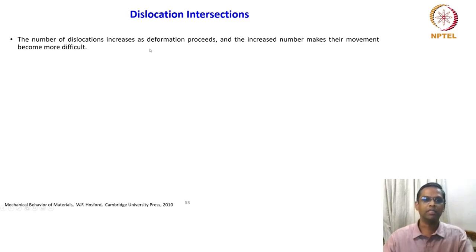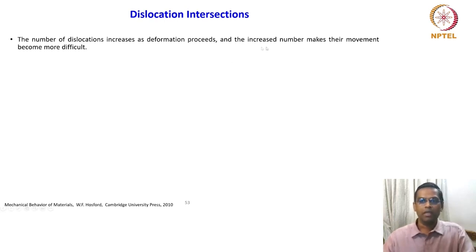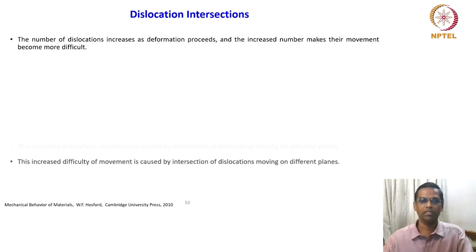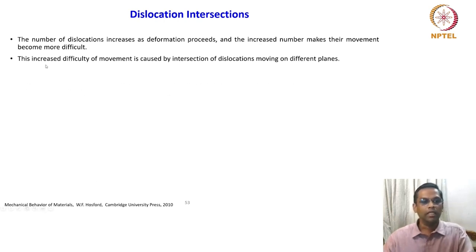The number of dislocations increases as the deformation proceeds. As you continue to deform the material below recrystallization temperature — that is, cold deformation — the increased number makes each dislocation more difficult to move because of interactions between neighboring dislocations. This increased difficulty of movement is caused by the intersection of dislocations moving on different planes.